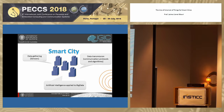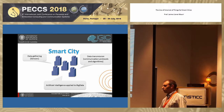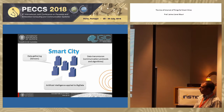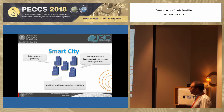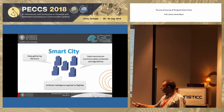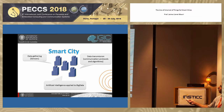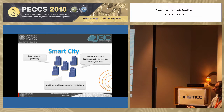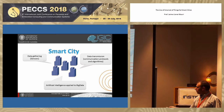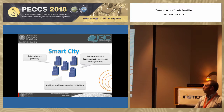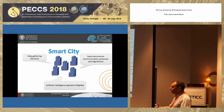I want to introduce two things. The first thing is Smart City — what is a Smart City and how is it built? A Smart City needs something for gathering data, which is sensors. It also needs some data transmission, that is communication protocols and algorithms. And to make it smart, we need artificial intelligence applied to big data. This is why we can have a Smart City.